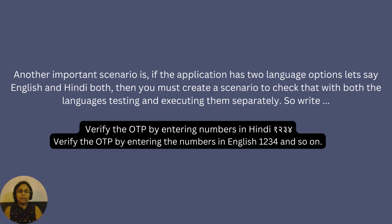Another important scenario is if the application has two language options — let's say English and Hindi both — then you must create a scenario to check with both languages, testing and executing them separately. So write: 'Verify the OTP by entering numbers in Hindi' and 'Verify the OTP by entering numbers in English,' and so on.